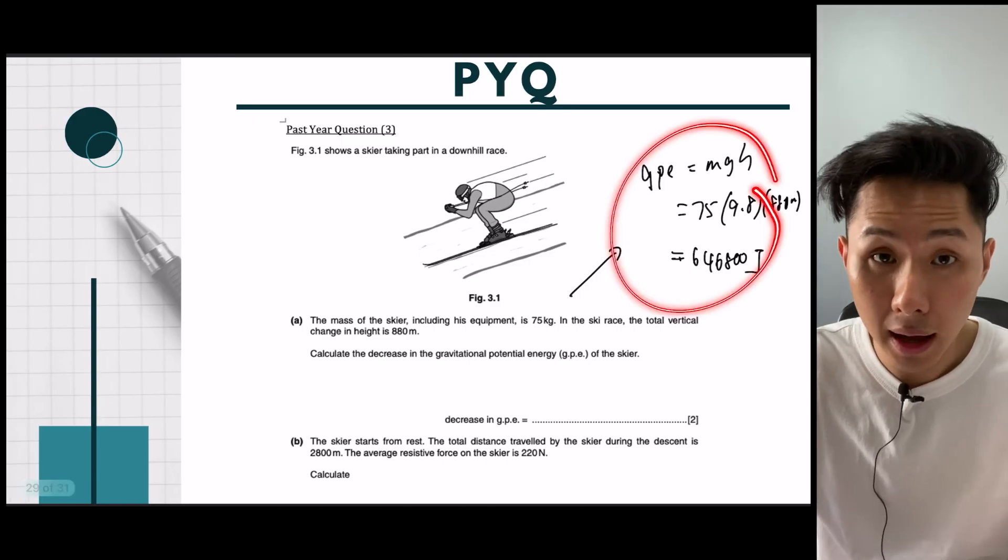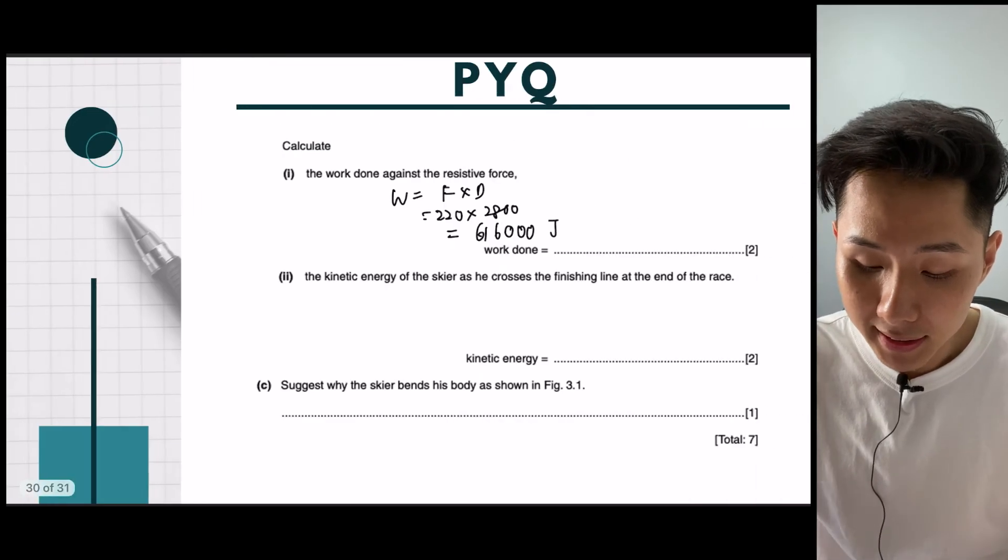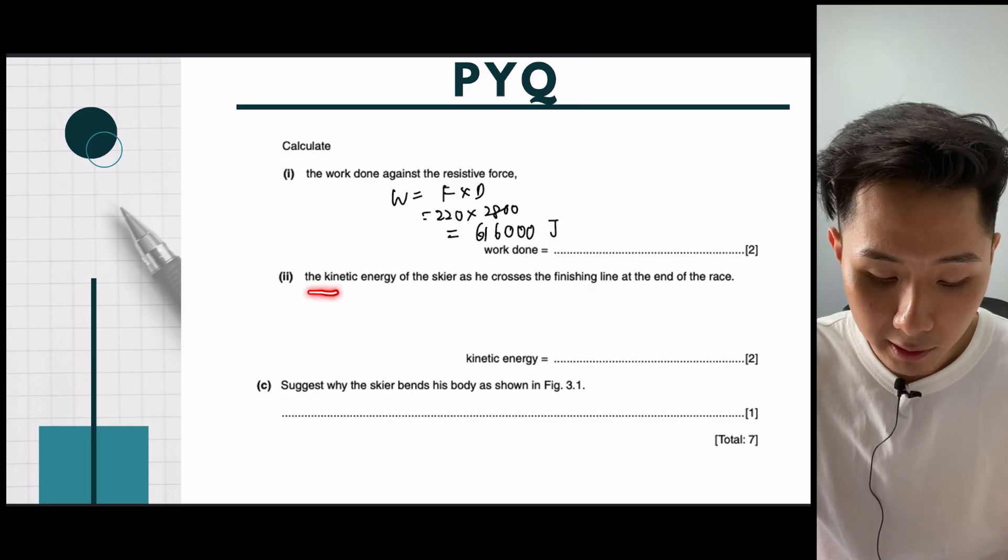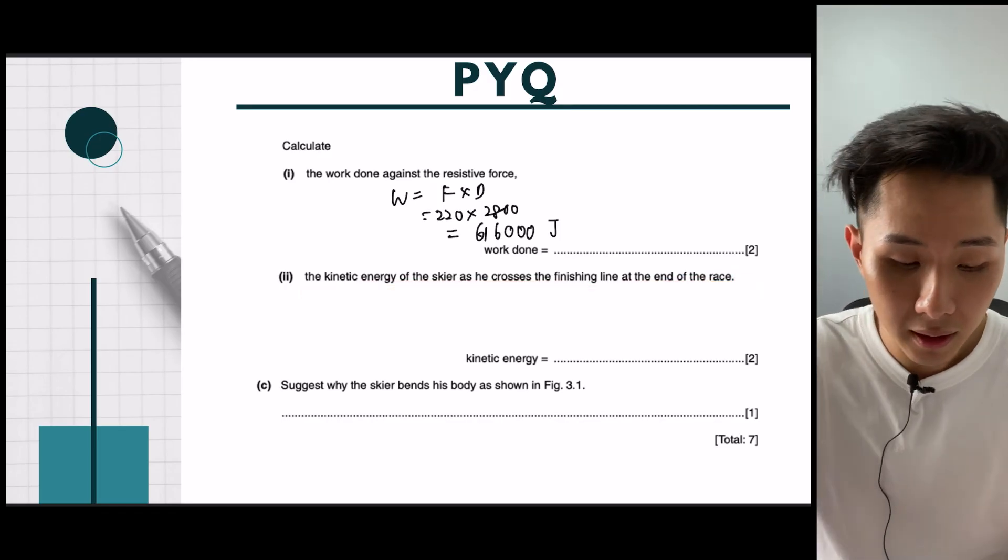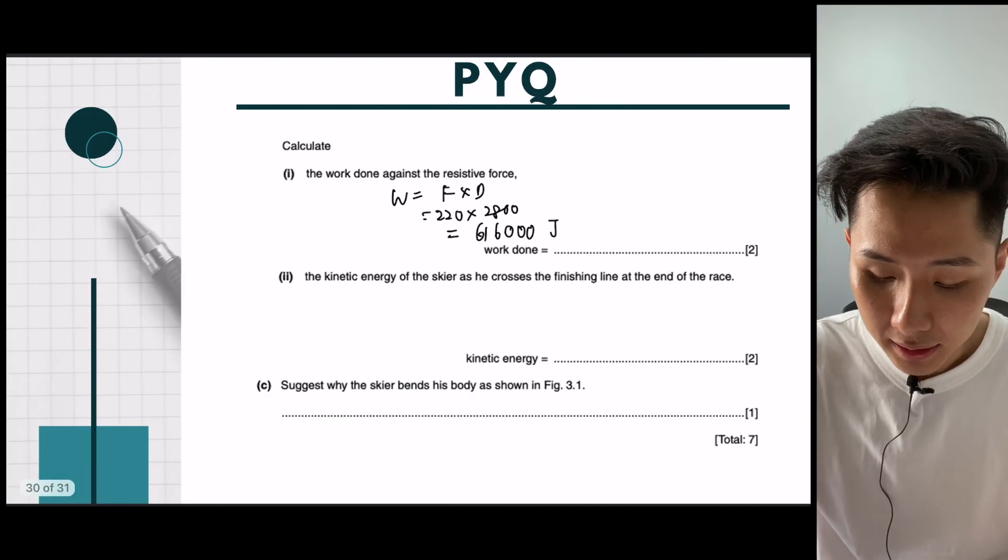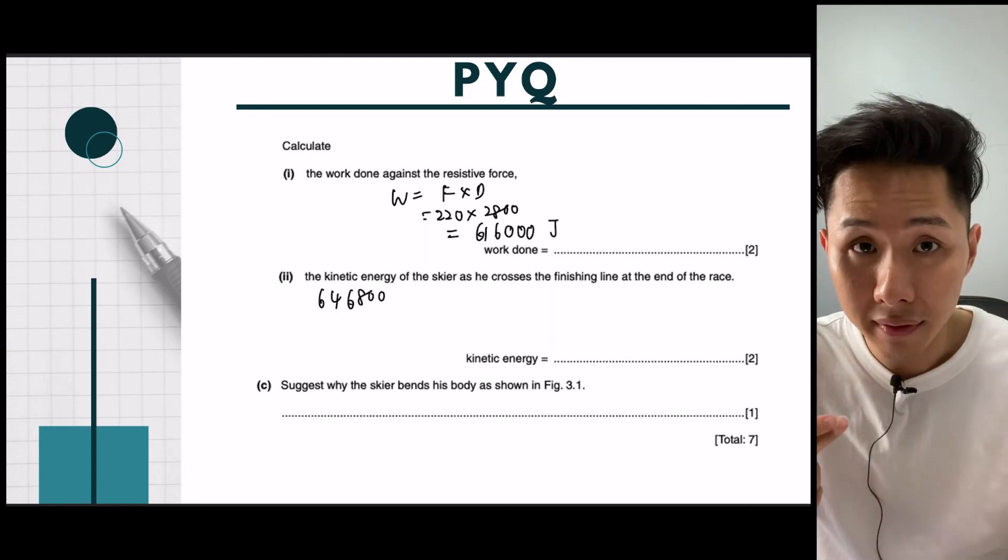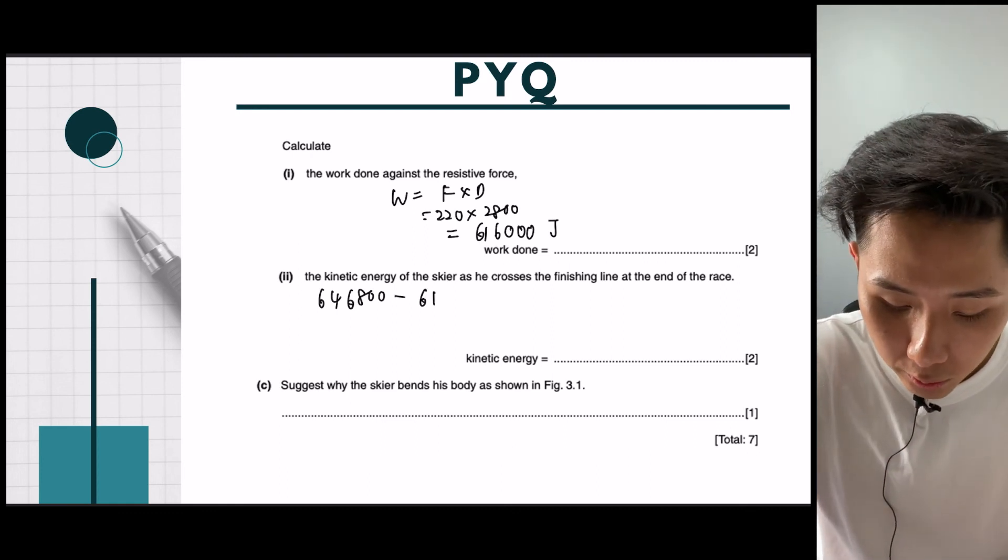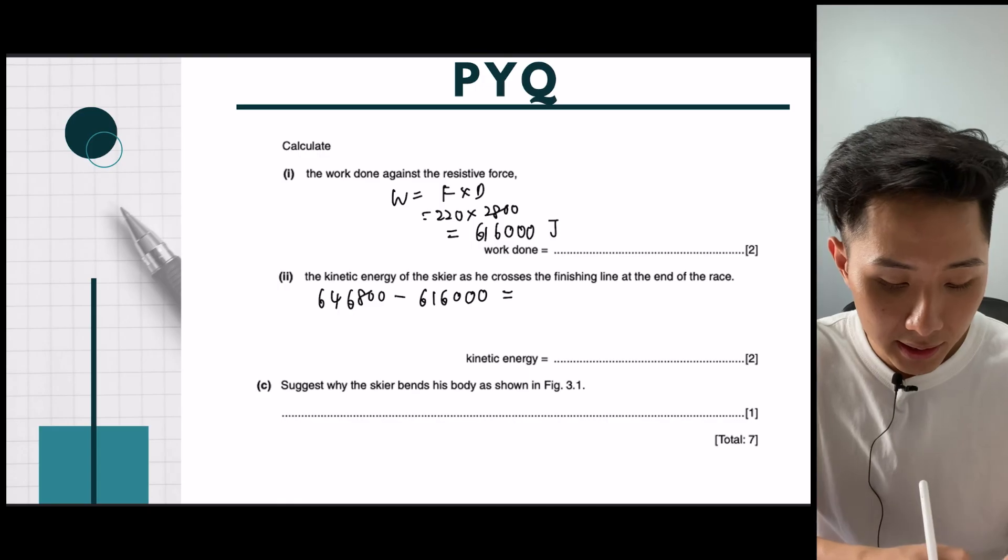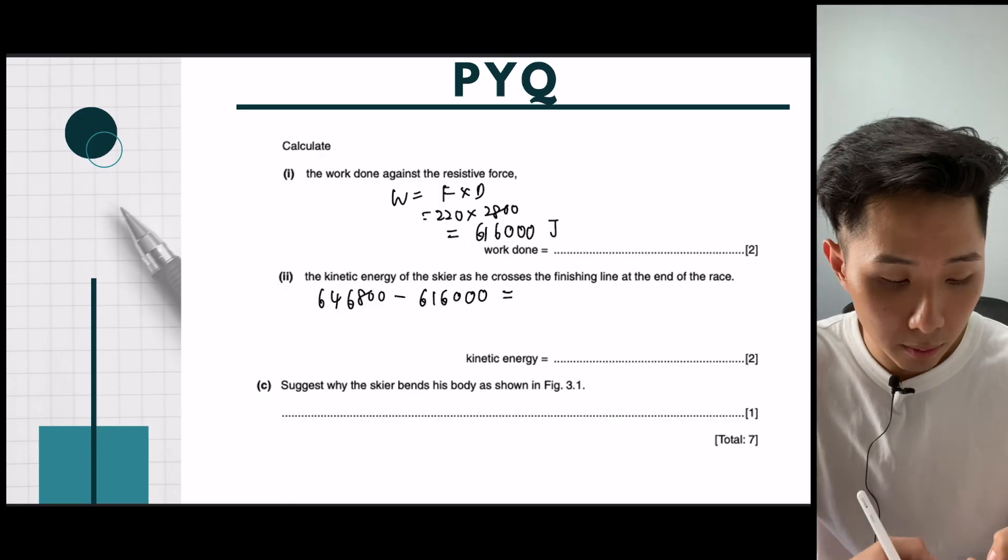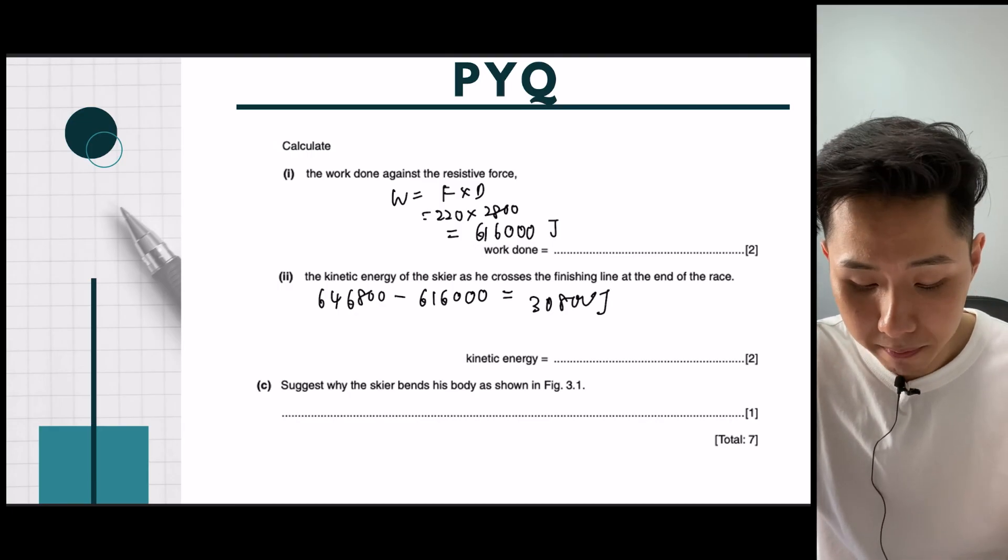We know that all this gravitational energy should be converted into kinetic as it moves down. But then, since some of it is being converted to friction, the next question asks, then what is the actual kinetic energy of this skier as he crosses through the finishing line? So to solve this question, we just have to know the loss in GPE, which is 646,800. So, that's the one that is lost by GPE. And some of them goes to the resistive force, so I'm just going to minus it. And the remaining will be the kinetic energy. So if I plug that into my calculator, I'll be getting 30,000 joules, which is actually a lot less.